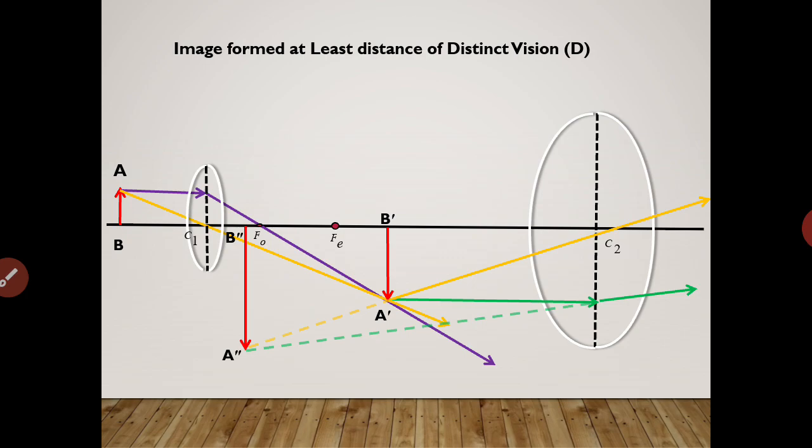So this final image is virtual, because it is formed due to the extended rays as shown in the diagram with dotted lines. It is inverted and it is highly magnified. We conclude this magnification by looking at the size of the original object AB and the final image A''B''.